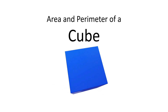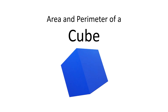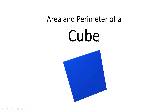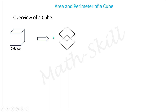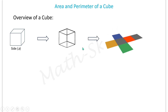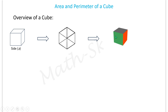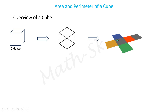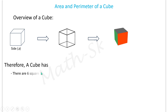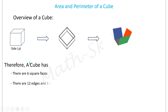Welcome to the YouTube channel Math Skill. In this session, let's learn about how to find the area and perimeter of a cube. To begin with, let's have an overview about a cube. A cube has six square faces. Suppose each square face has a side of length a. Upon flipping the cube in any direction, all the faces look equal. Upon cutting open the cube, we get six square faces, identified by different colors here.